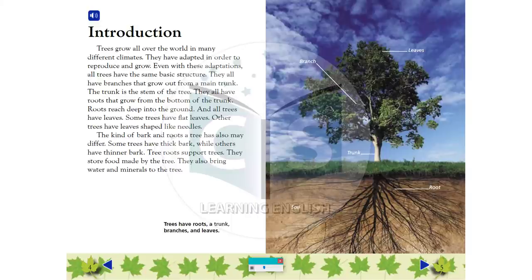They all have branches that grow out from a main trunk. The trunk is the stem of the tree. They all have roots that grow from the bottom of the trunk. Roots reach deep into the ground. And all trees have leaves. Some trees have flat leaves. Other trees have leaves shaped like needles.